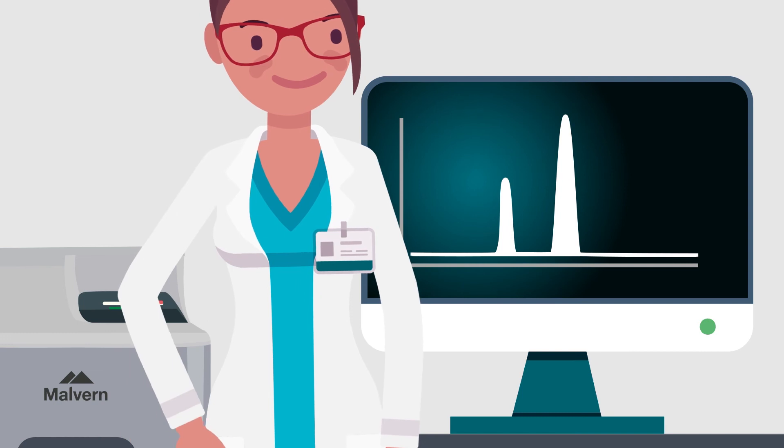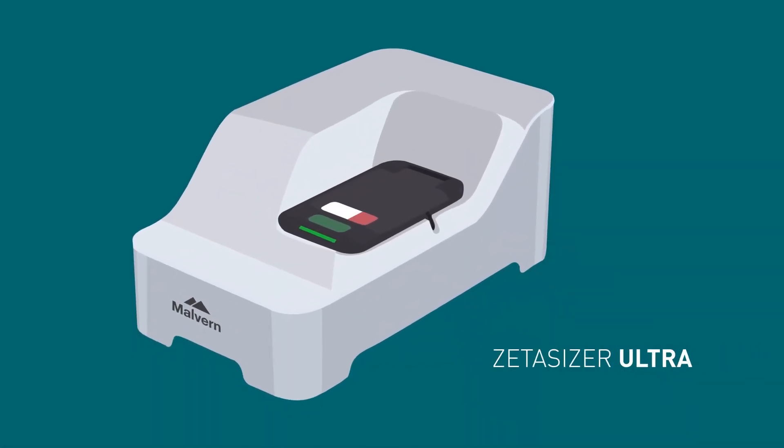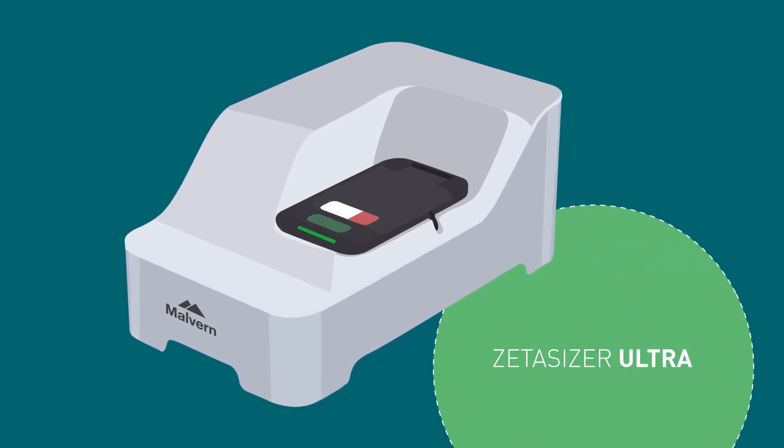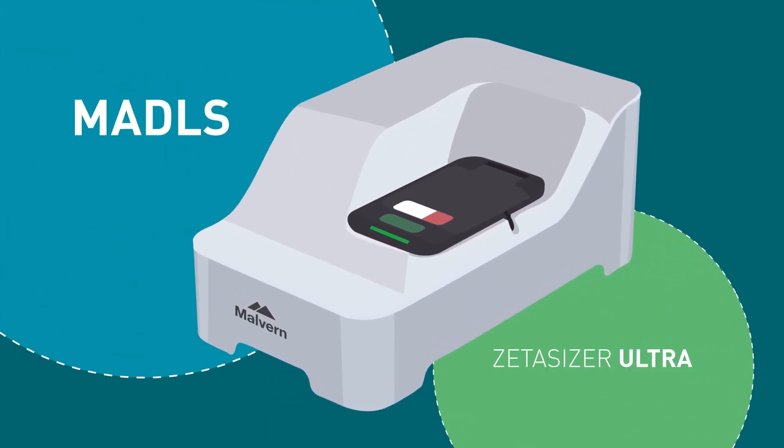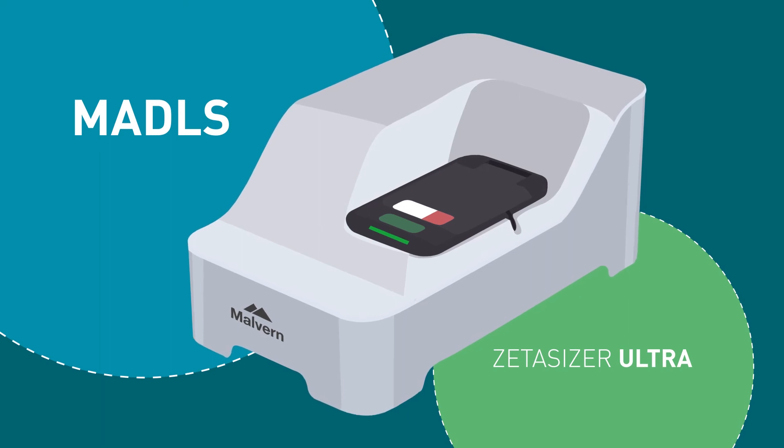Guiding you down the right path to ensure your results are the best possible. The Zetasizer Ultra is Malvern Panalytical's flagship DLS instrument and incorporates MADDLS, alongside our other pioneering features.